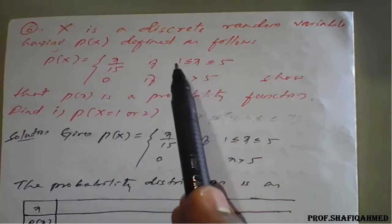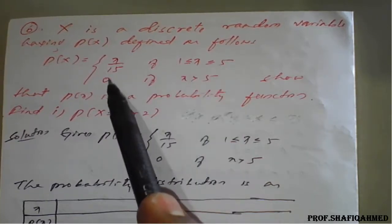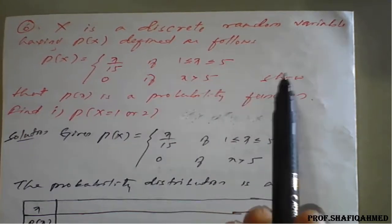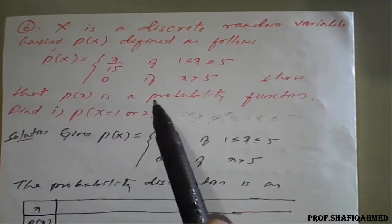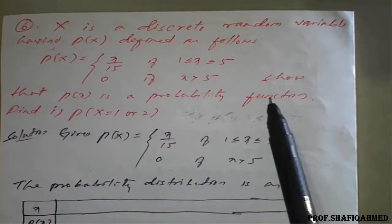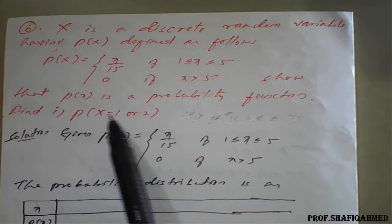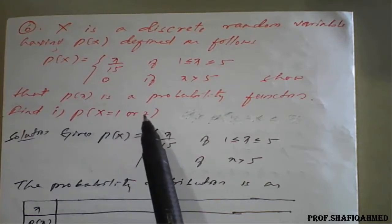If X lying between 1 and 5 and the result will be 0 if it goes to greater than 5, then we need to show that P of X is a probability function. Find P of X is equal to 1 or 2 here.